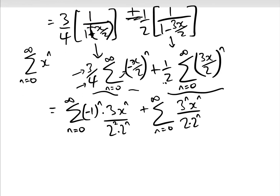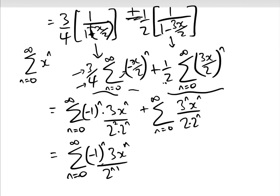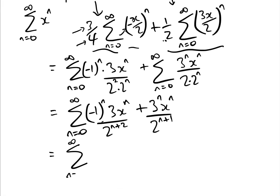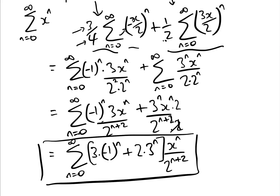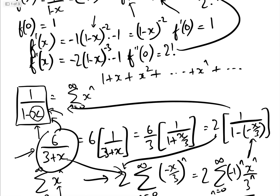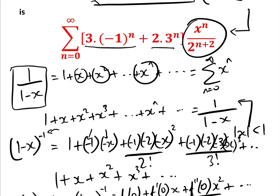Merging the two series, we get the sum from n=0 to infinity of [3·(−1)^n · x^n / 2^(n+2)] + [3^n · x^n / 2^(n+1)]. To combine over a common denominator of 2^(n+2), we multiply the second term top and bottom by 2. This gives the sum from n=0 to infinity of [3·(−1)^n + 2·3^n] · x^n / 2^(n+2), which is the required general term.